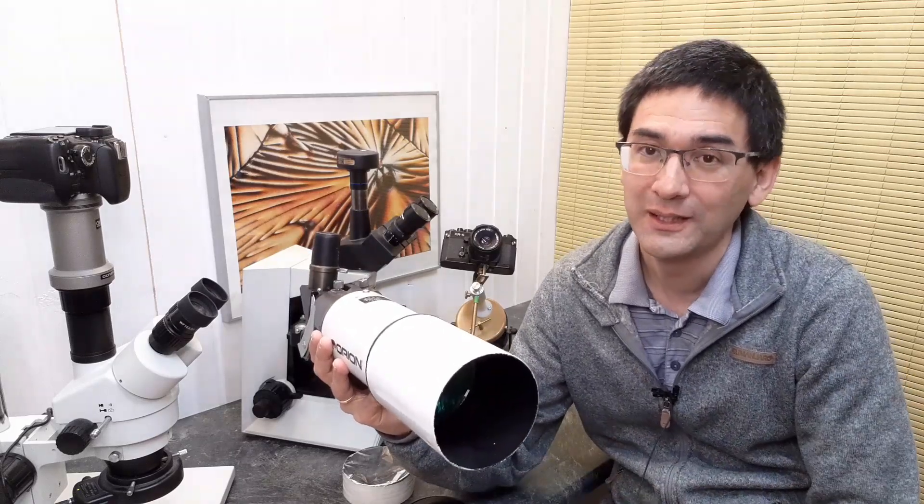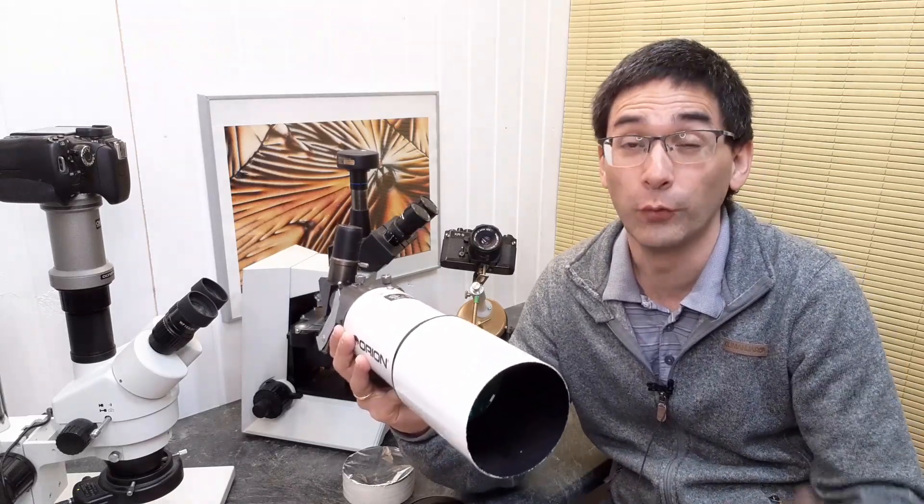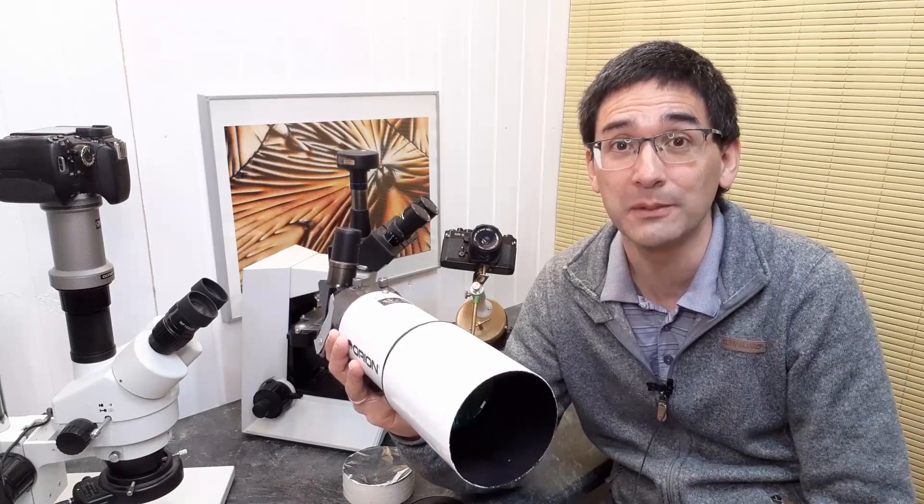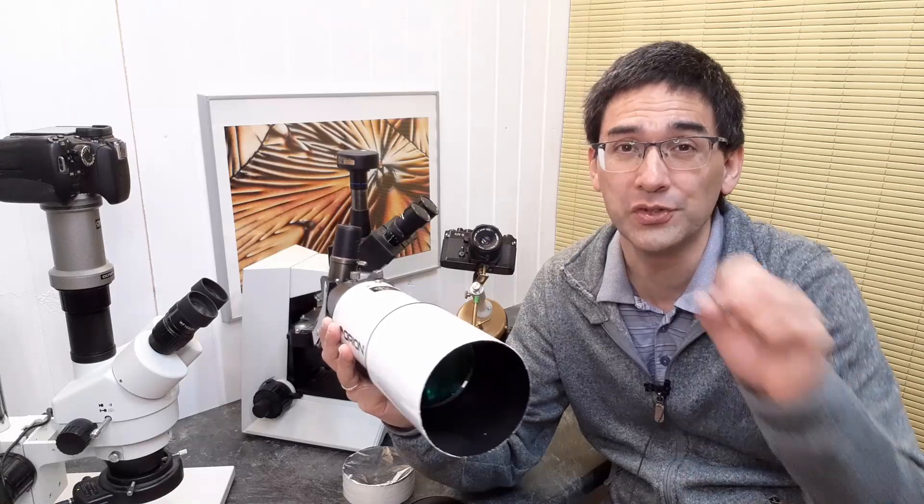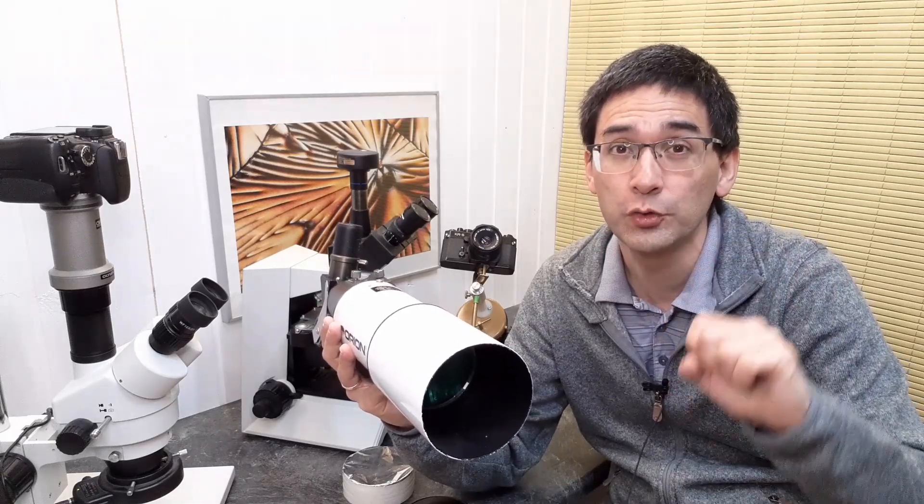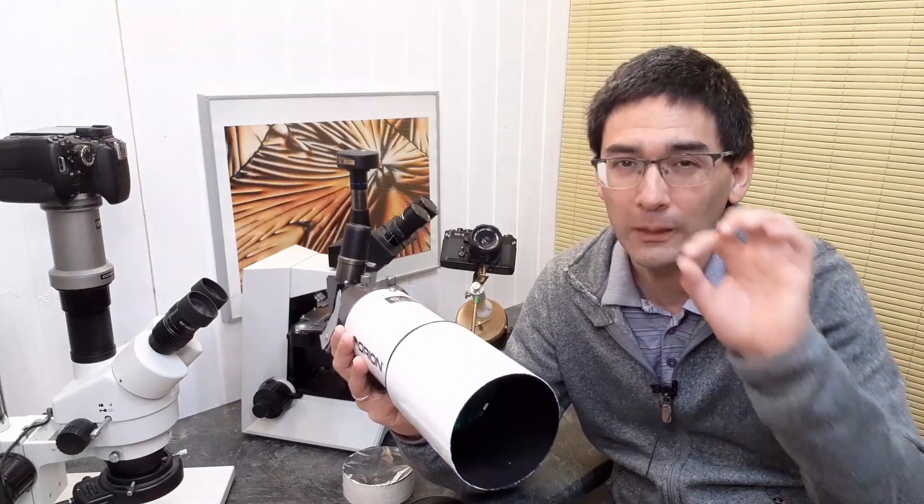So what can you see, of course, the planets, Jupiter, the four moons of Jupiter, very nicely visible, Saturn, the ring of Saturn can be seen. If the conditions are good, you can also see the cloud formations of Jupiter a little bit, not very well, but a little bit as well.